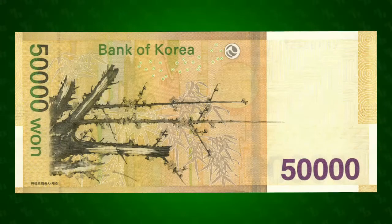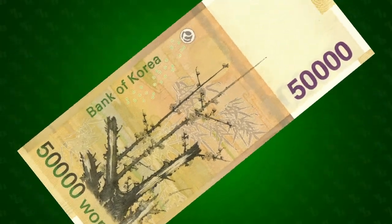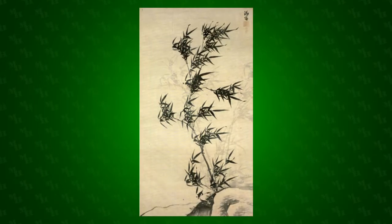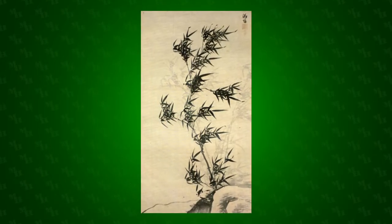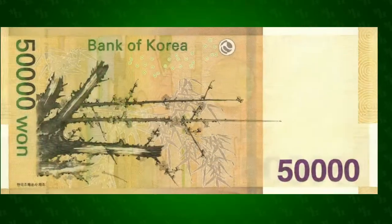The reverse of the note has two vertically-oriented works of art from Joseon-era artists. In the foreground is a painting of a Chinese plum tree by Yeomong Rong, and in the background is a painting of bamboo in the wind by Lijiang. To the right of these is another latent image of the note's denomination. Both sides of the note have micro-printing of the bill's denomination and Bank of Korea.